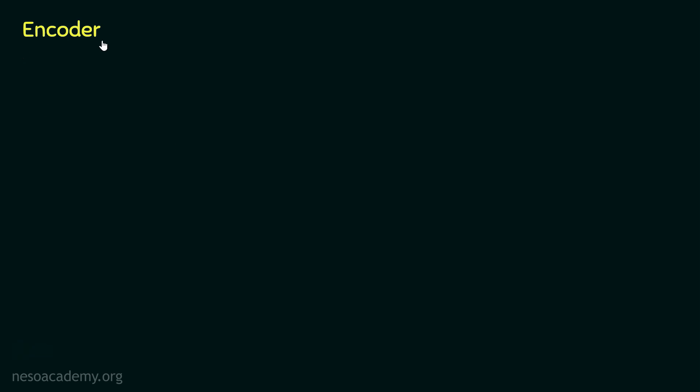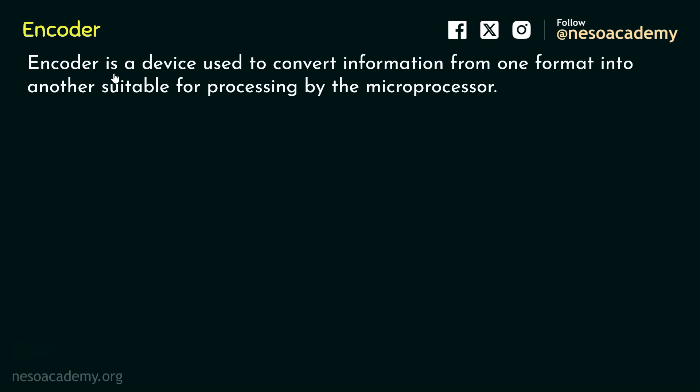Now an encoder, in the context of interfacing components with a microprocessor such as 8085, is a device which is used to convert information from one format into another, suitable for processing by the microprocessor. Let me explain this functionality with the help of an illustration. Say we would like to interface the keyboard with the 8085 Microprocessor.